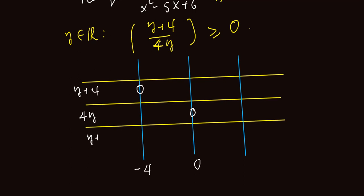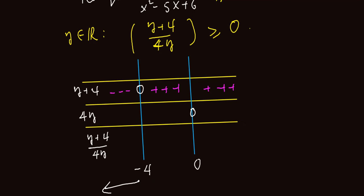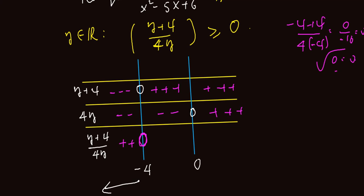Analyzing the sign table for y plus 4 divided by 4y: for all numbers below negative 4, y plus 4 is negative and 4y is also negative, so the ratio negative divided by negative is always positive. At negative 4 we get 0, which is a valid value. Between negative 4 and 0, the numerator is positive and the denominator is negative, giving a negative number. At 0, the expression is undefined, so 0 is excluded. For values above 0, positive divided by positive is positive.